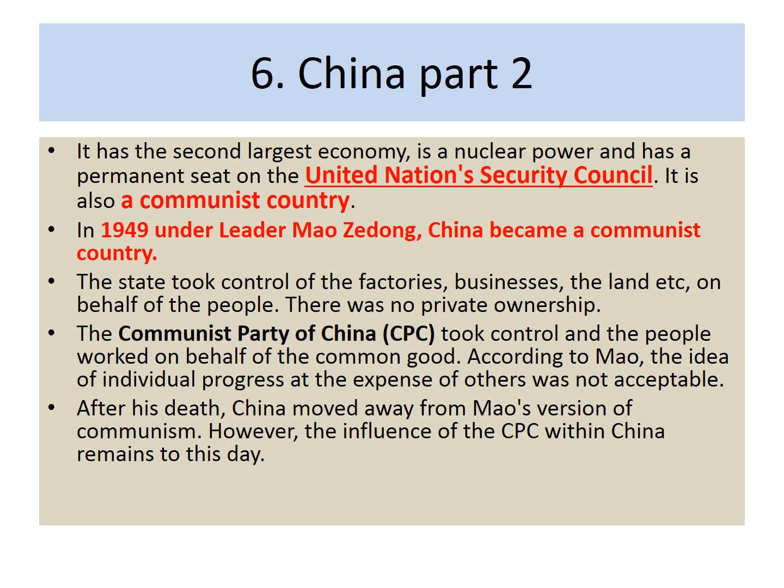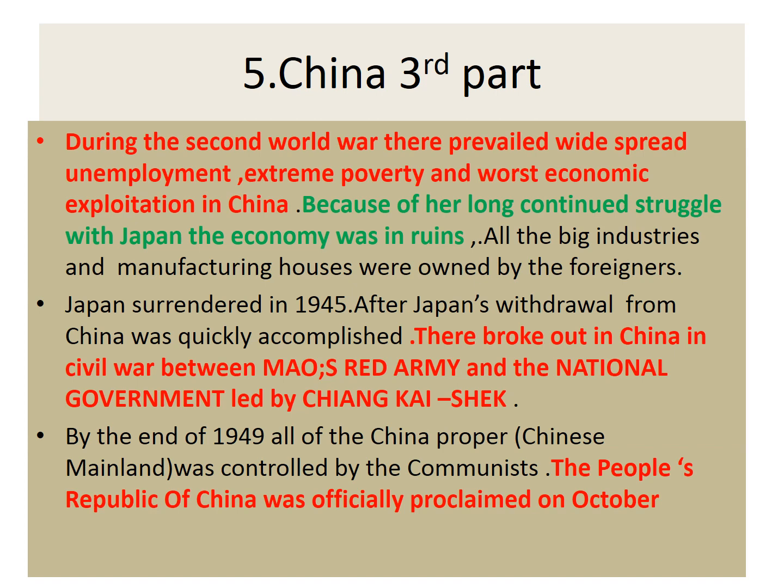Japan finally surrendered in 1945. After Japan's withdrawal from China, a civil war broke out between Mao's Red Army and the national government led by Chiang Kai-shek. By the end of 1949, all of mainland China was controlled by the Communist Party, and the People's Republic of China was officially proclaimed in 1949.